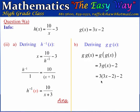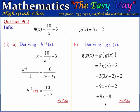This reduces to 3 multiplied by 3x minus 2, minus 2. Simplifying: 3 times 3x is 9x, and 3 times negative 2 is negative 6, with negative 2 coming back. So that reduces to 9x minus 8. That's the answer for this part. Let's move down to part b of question 9.